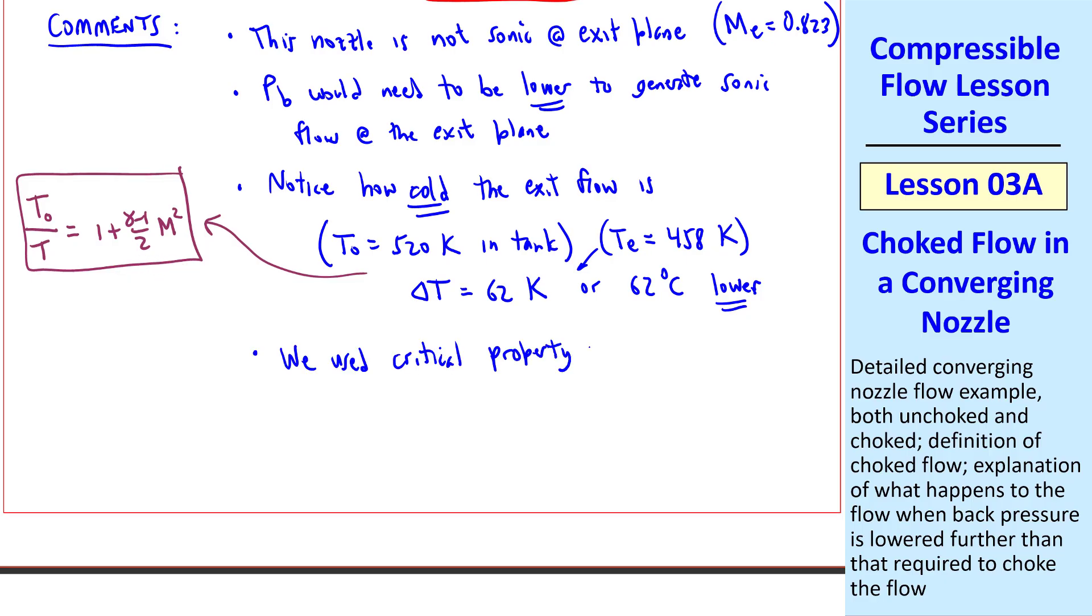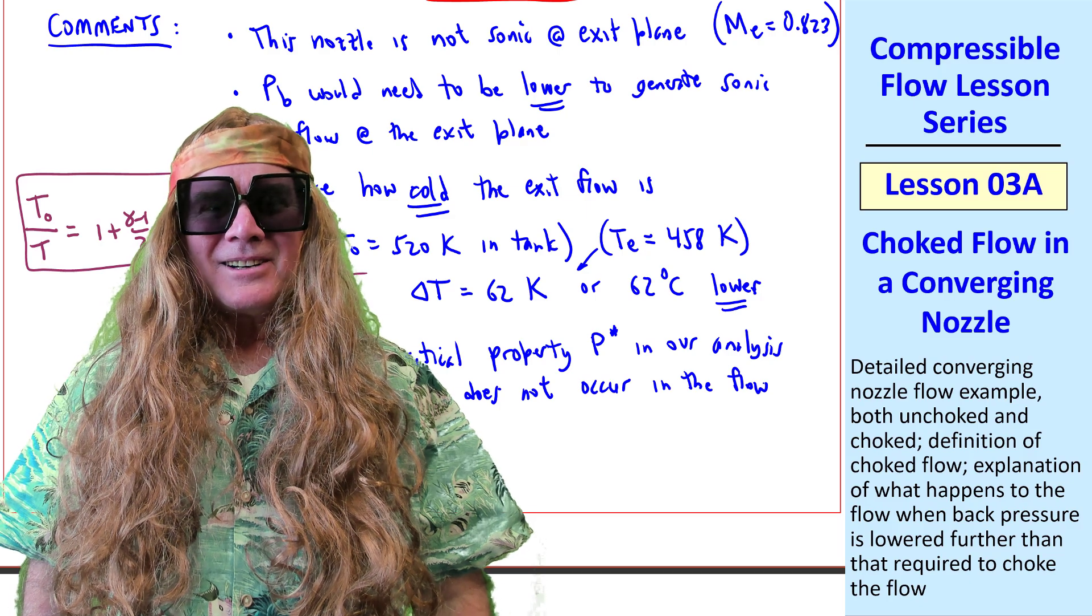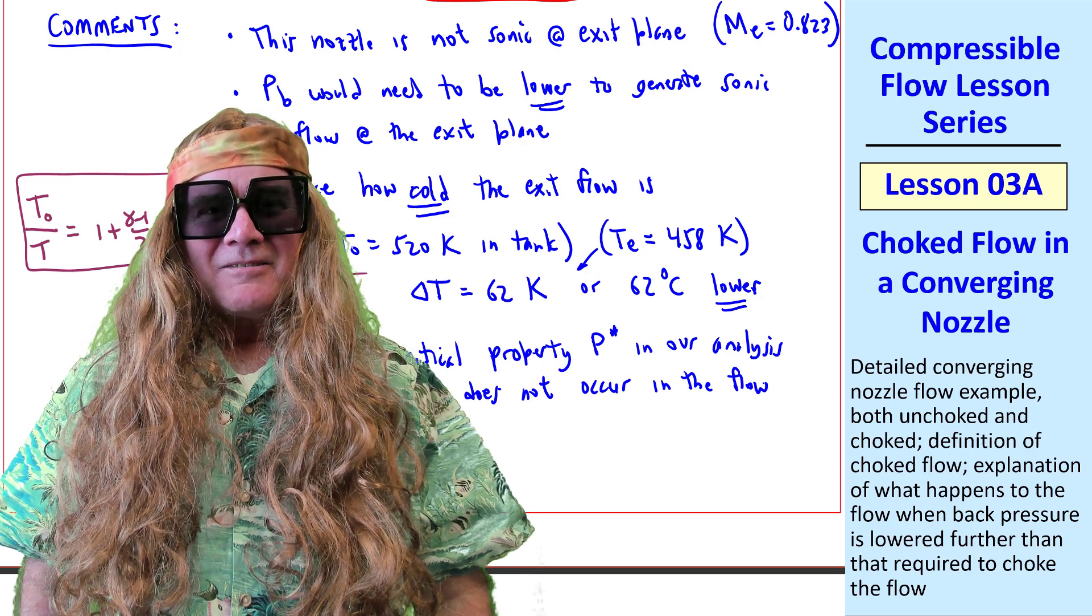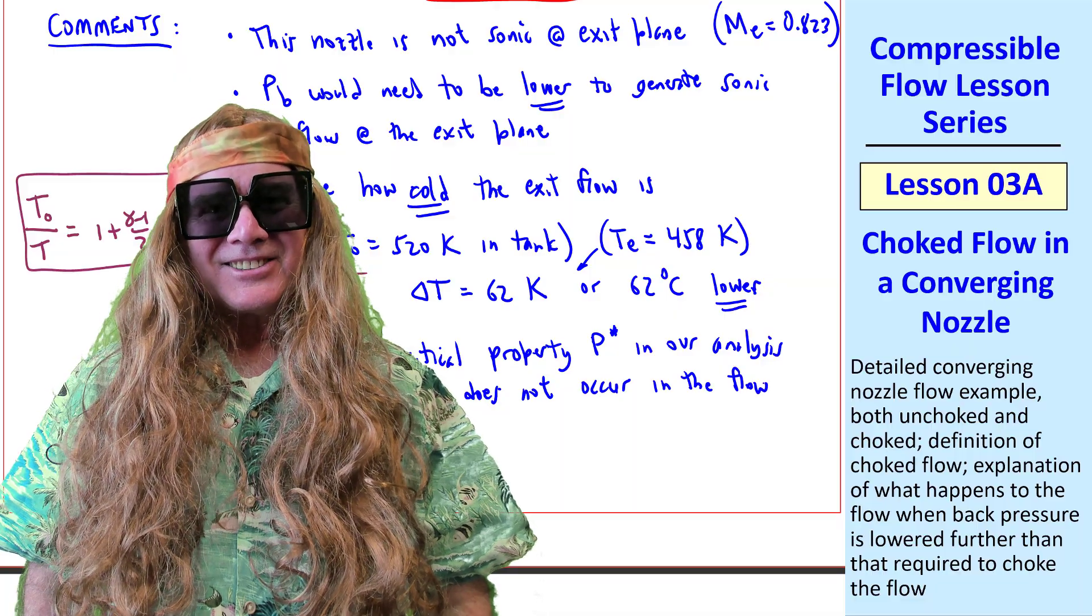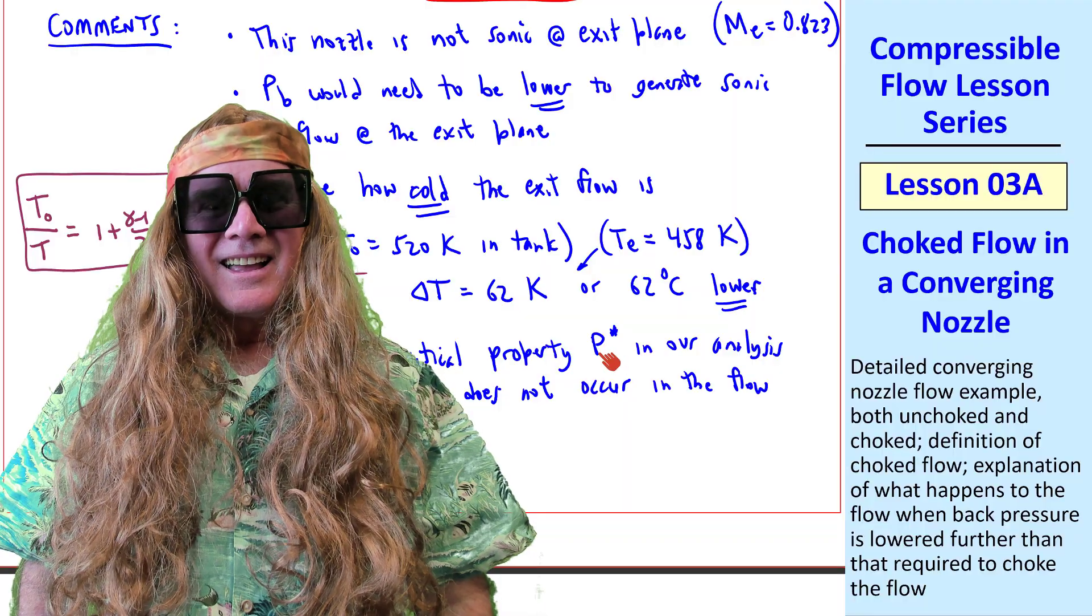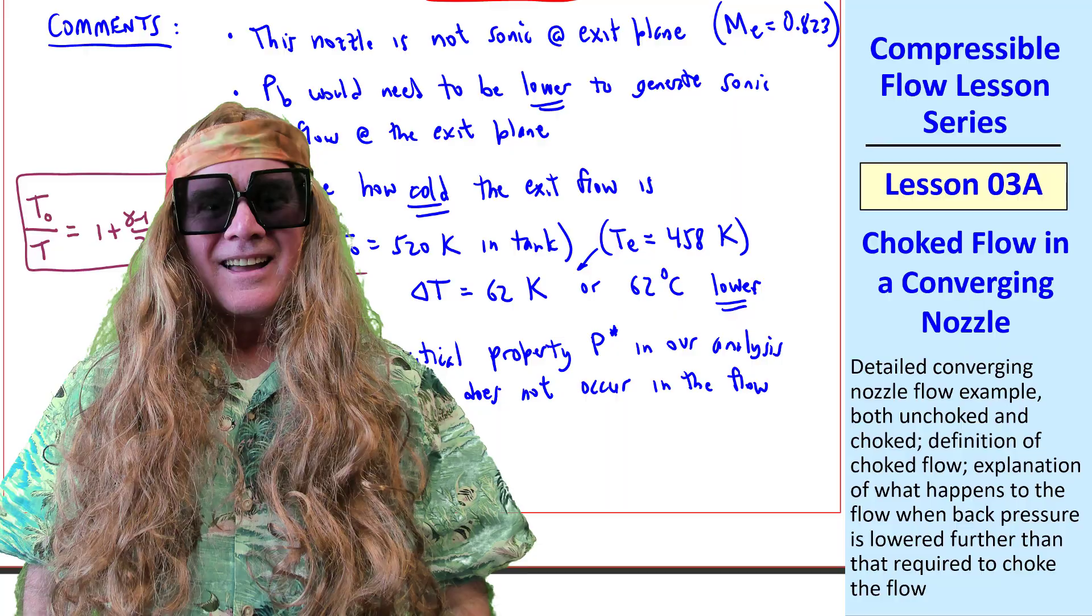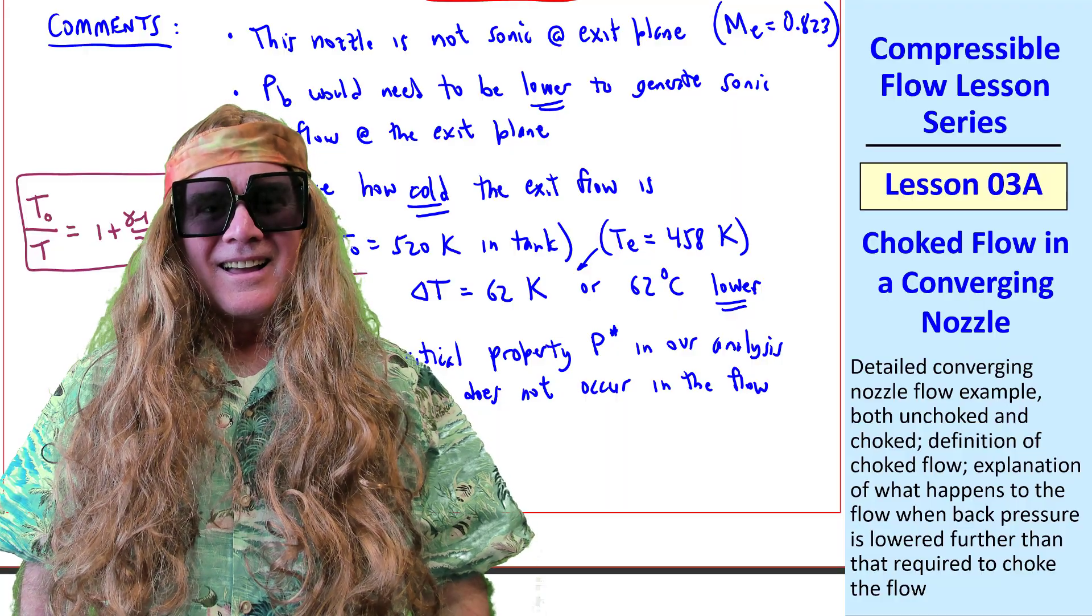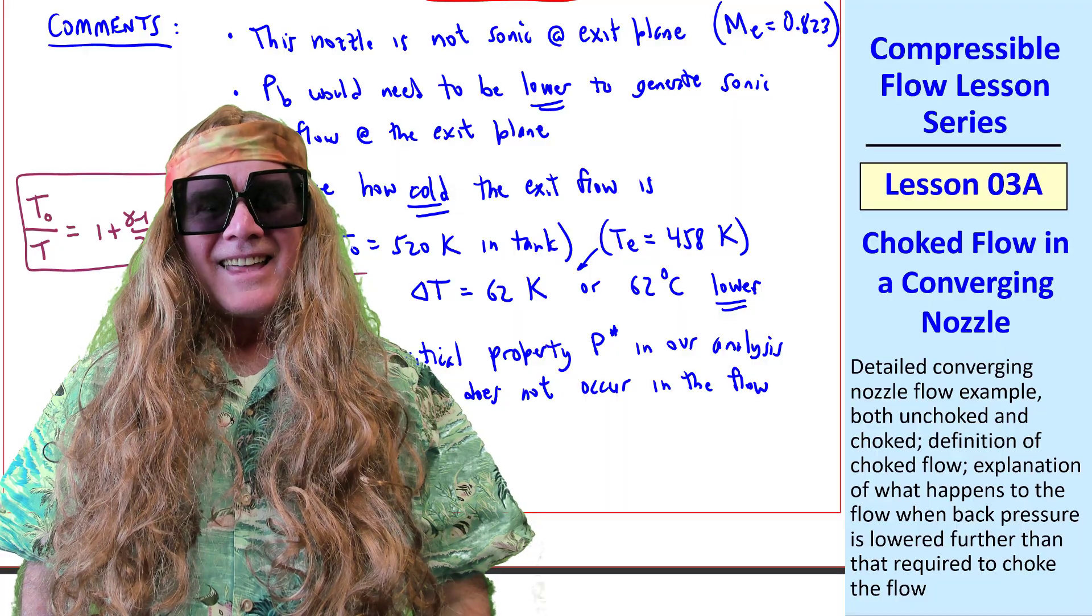Finally, we used critical property P-star in our analysis, even though it doesn't occur anywhere in the flow. That sounds similar to the previous lesson when we were talking about stagnation properties that you could still use, even if they weren't there. Right, Arlo. P-star and the other critical properties are just properties, and we can use them in our analysis, even if they don't actually occur anywhere in the flow. Thanks, Doc!